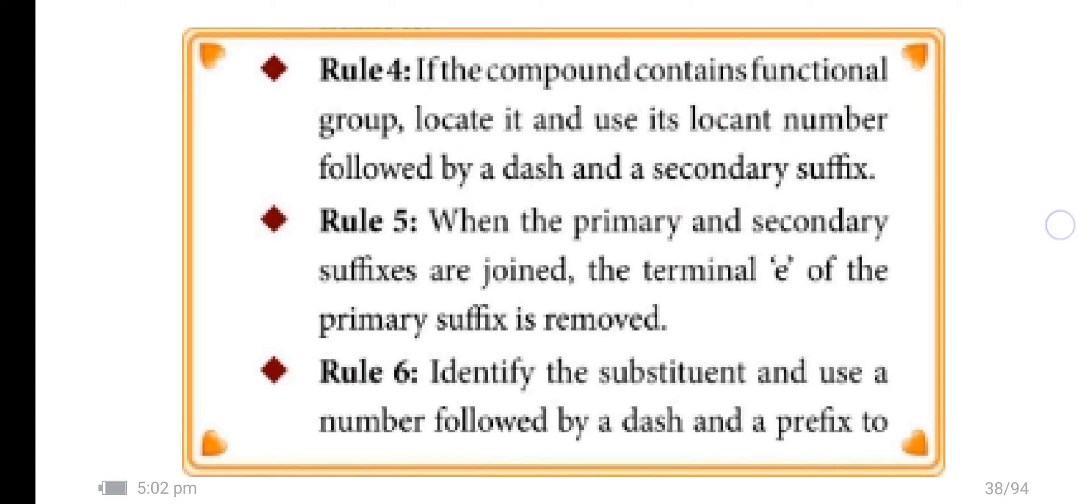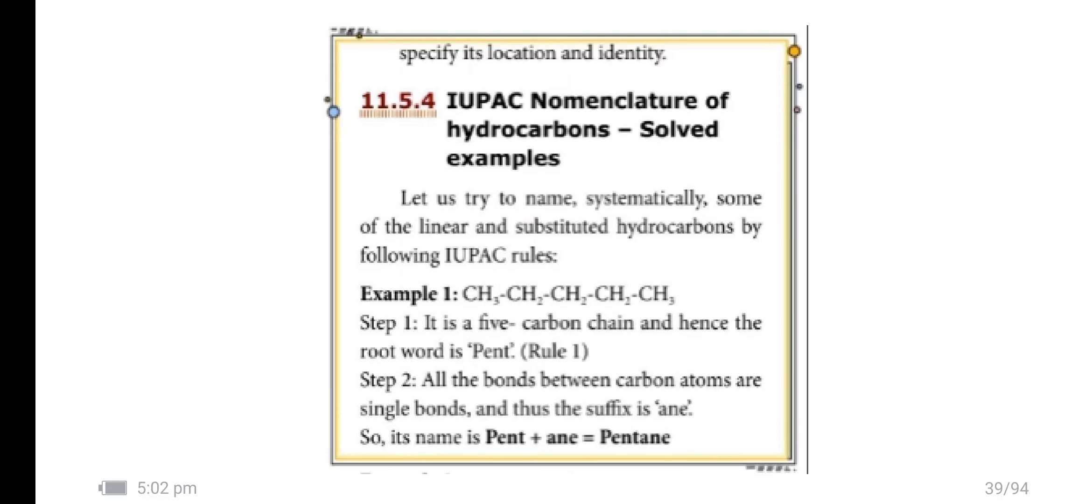Rule 5 - When a primary and secondary suffix are joined, the terminal 'e' of the primary suffix is removed. Rule 6 - Identify the substituent and use a number followed by a dash and a prefix to specify its location and identity.